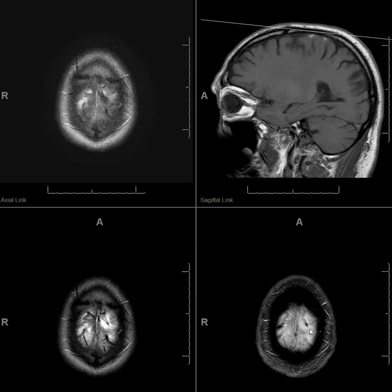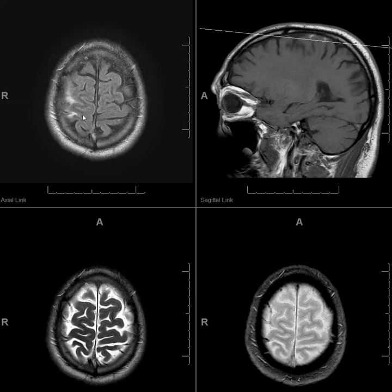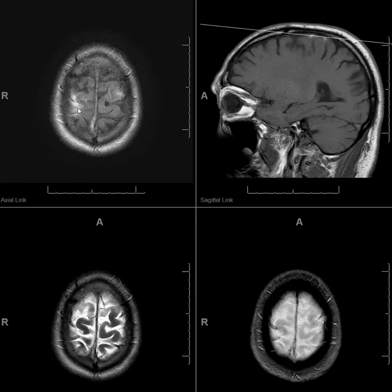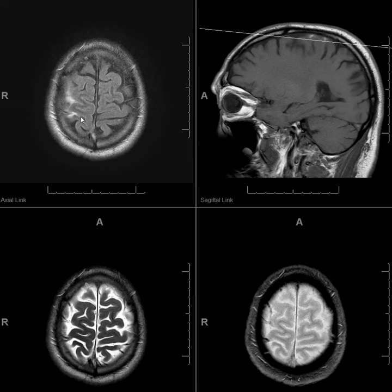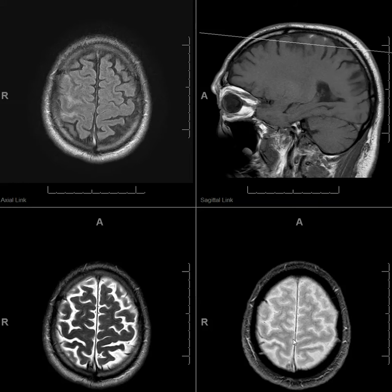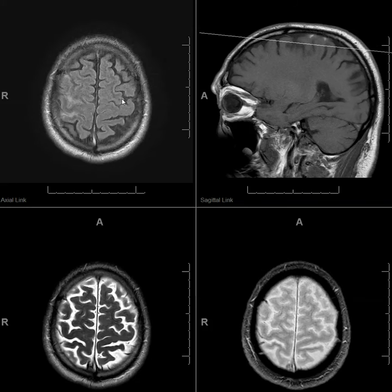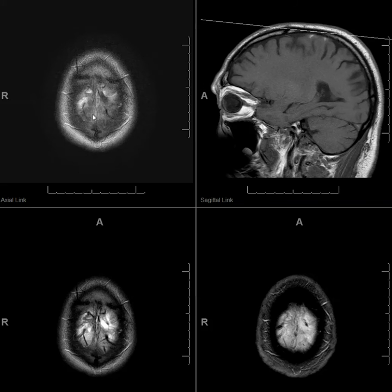On the FLAIR, it almost looks like the vein with some adjacent hemorrhage because they are filling the gap in the sulcal side. However, on GRE, you don't see the subarachnoid hemorrhage — so that is the appearance of cortical vein thrombosis, bilaterally.